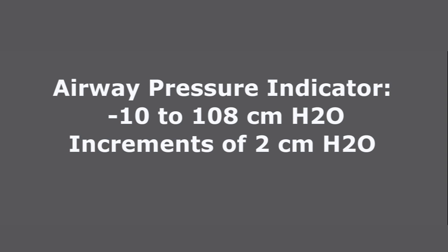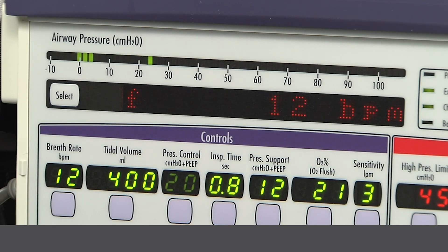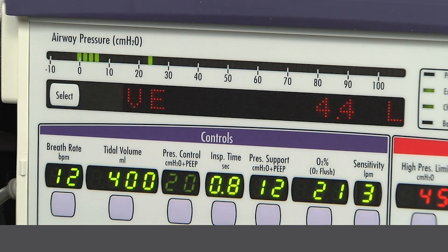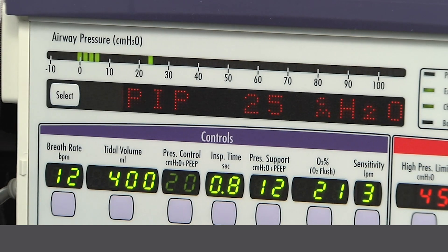The monitored data is displayed for 3 seconds in the following order: the peak inspiratory pressure, the mean airway pressure, the PEEP, the frequency or total breath rate, the exhale tidal volume, the minute ventilation, the IE ratio, the calculated peak flow rate for volume breaths, and then back to the peak inspiratory pressure.